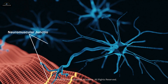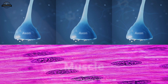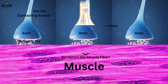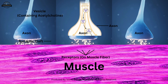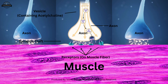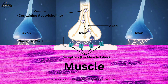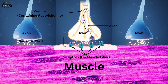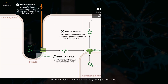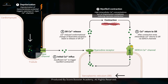When a nerve impulse reaches the neuromuscular junction, it causes the release of acetylcholine, a neurotransmitter, into the synaptic cleft. Acetylcholine binds to receptors on the muscle fiber membrane, generating an action potential that travels along the membrane and down the transverse tubules. This action potential triggers the release of calcium from the sarcoplasmic reticulum into the sarcoplasm.